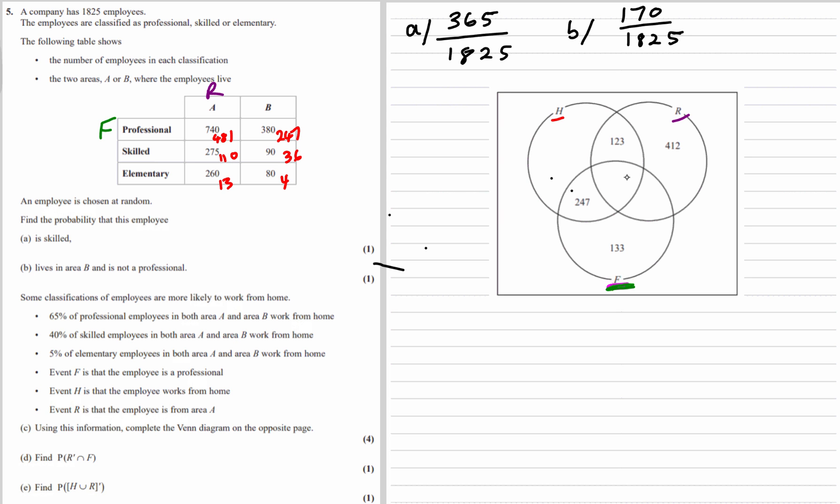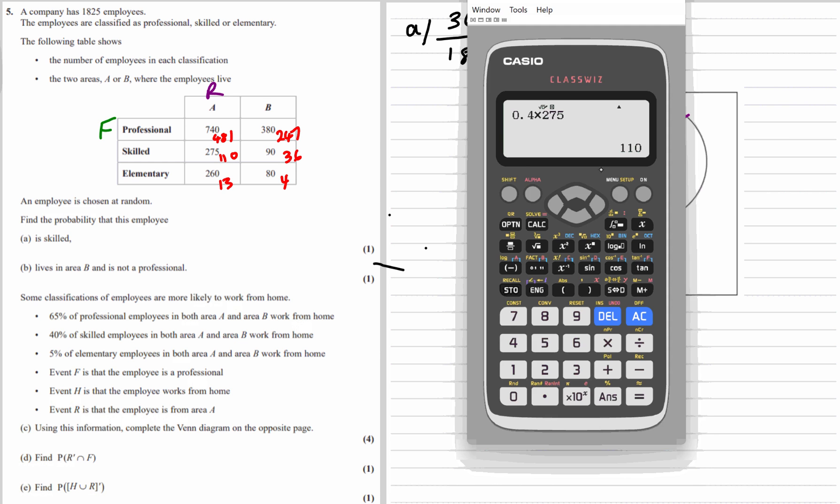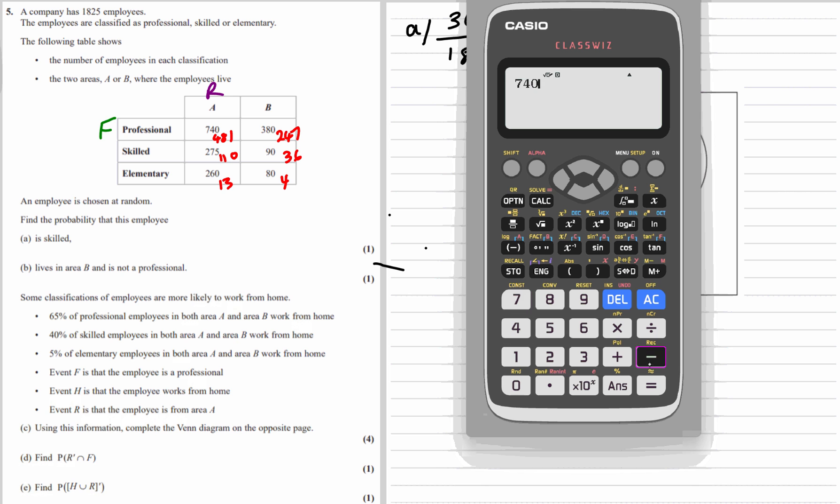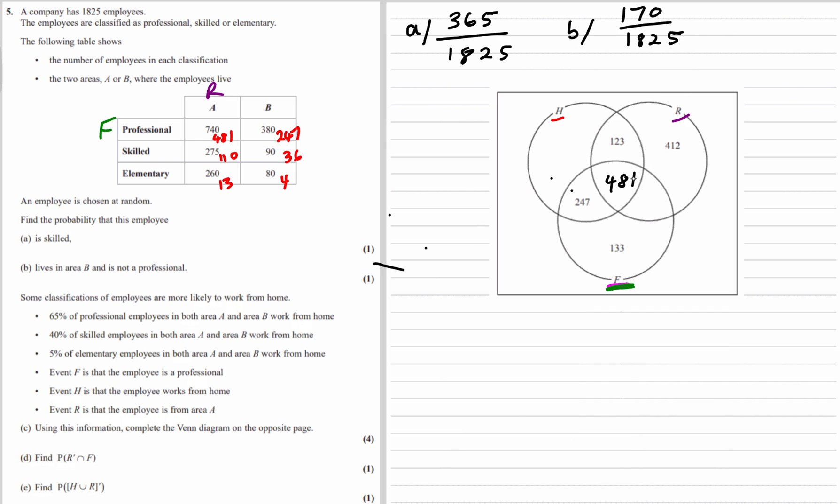So complete the Venn diagram. So the middle of all of them will be the H, R and F. So professionals in A working from home, 481. And then the intersection of F and R is professionals in A, so 740 take away the 481. So 259, professionals in area A don't work from home.